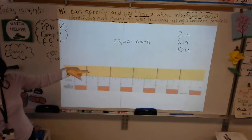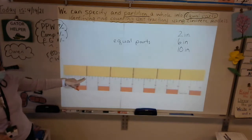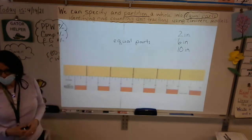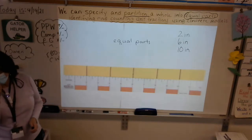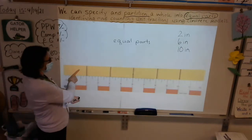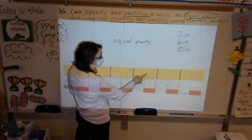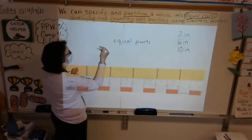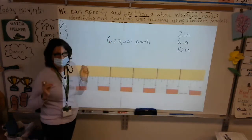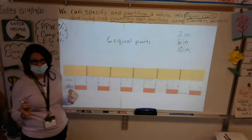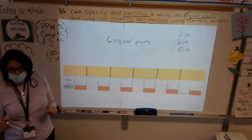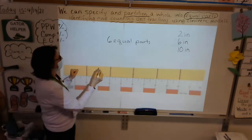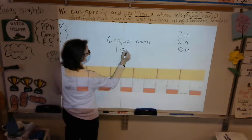If you drew additional lines at two, six, and ten inches, let's count how many equal parts we have now: one, two, three, four, five, six. We have six equal parts. If we have six equal parts, our unit is one sixth. Very good — our unit is one sixth.